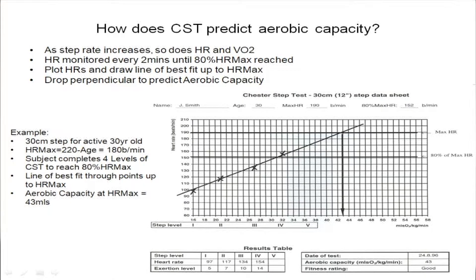To summarise how a step test predicts aerobic capacity: as step rate increases, so do heart rate and oxygen uptake. Heart rate is monitored every two minutes until 80% of max heart rate is reached. Plot the heart rates and draw the line of best fit up to heart rate max, then drop a perpendicular to predict aerobic capacity. The example shown illustrates data being put onto the graphical data sheet to produce the result.